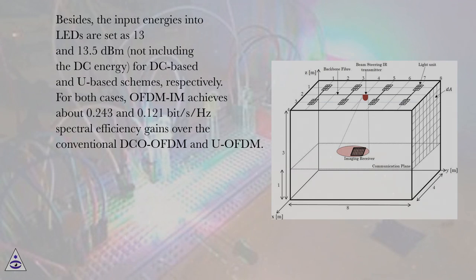the input energies into LEDs are set as 13 and 13.5 dBm, not including the DC energy, for DC-based and U-based schemes, respectively.